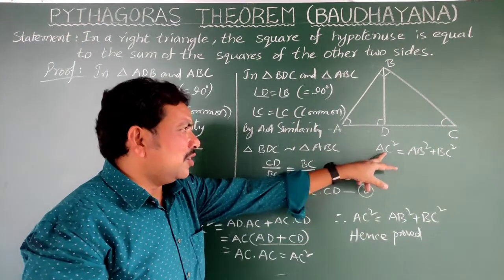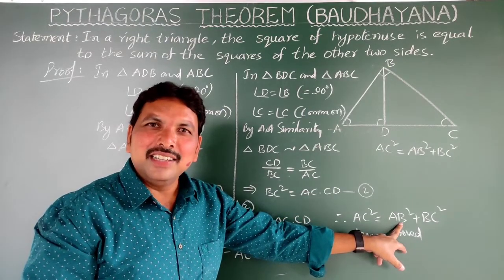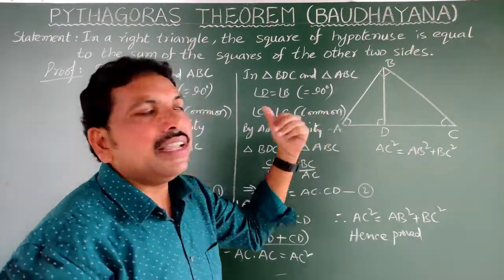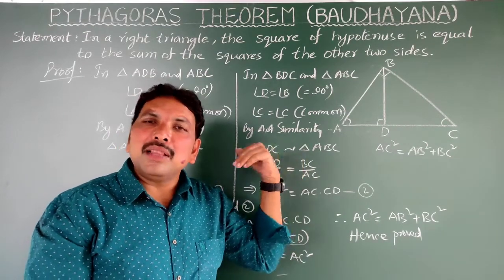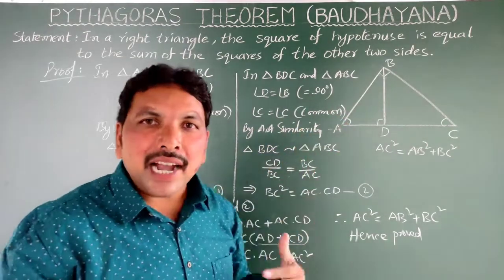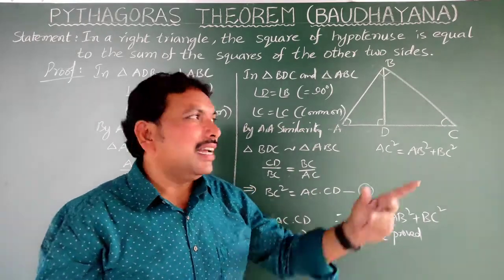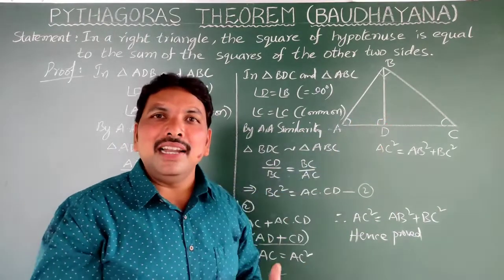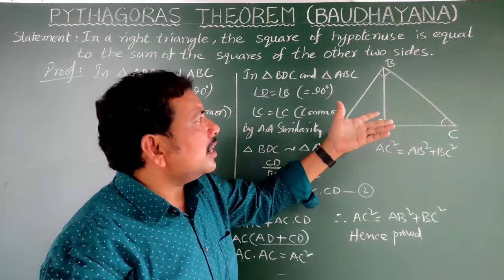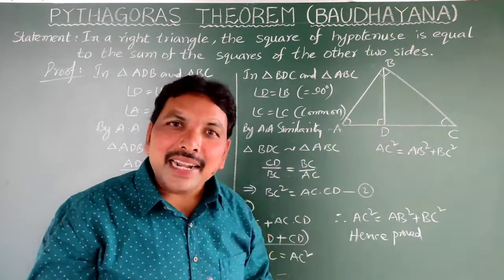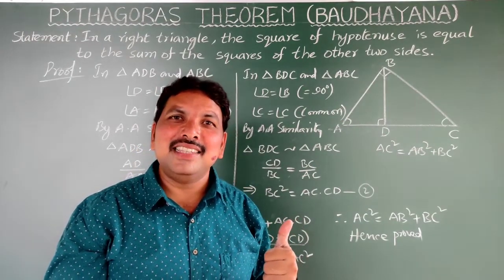We got AC² = AB² + BC². This is a very, very important theorem — it is widely used in everything in mathematics, mainly in trigonometry. Everything in trigonometry depends upon this right-angled triangle. Thank you.